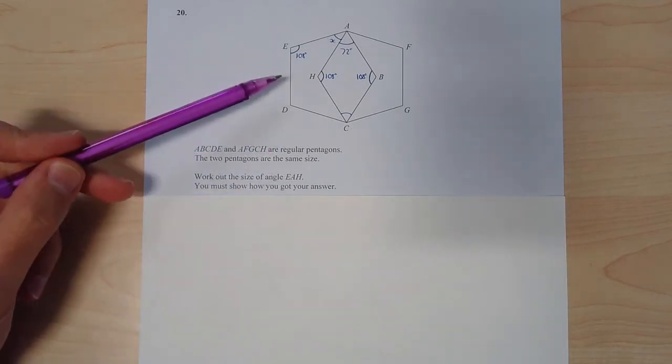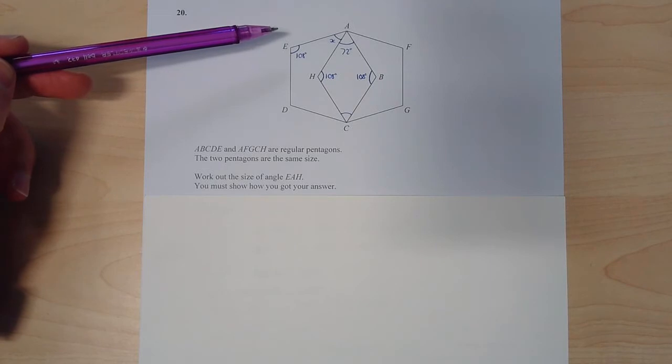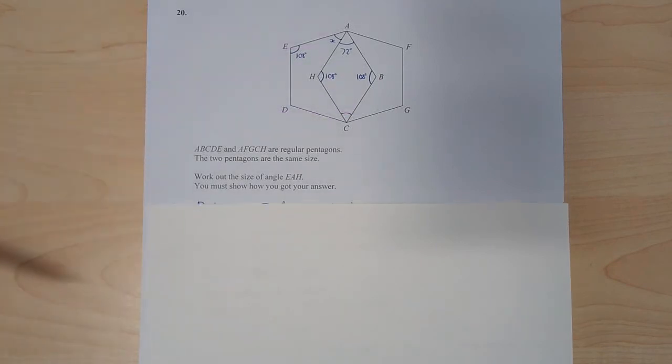You can see I've already labelled some things up here for my working. Let's just see how I got to some of these. So firstly because I know that a pentagon has five sides I know that I can split it up into three triangles.